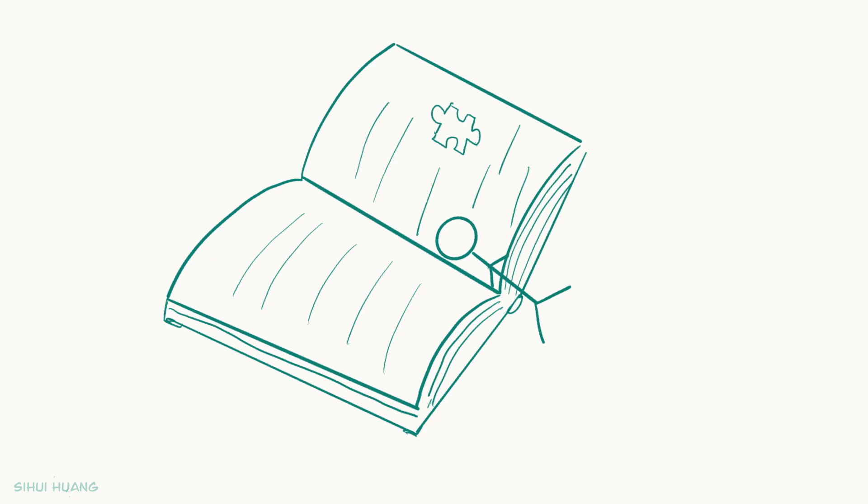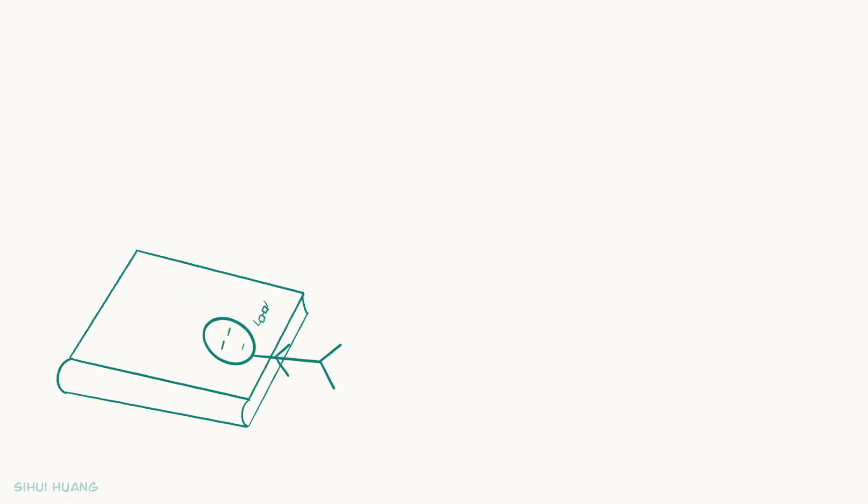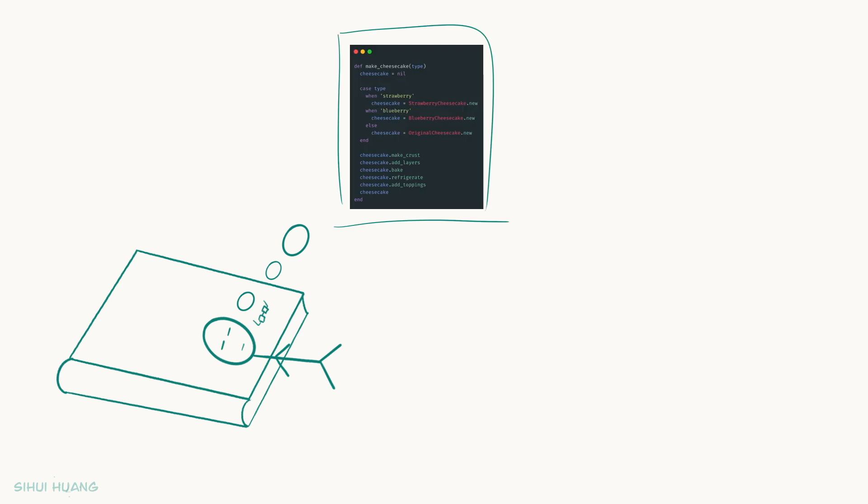As soon as he reaches home, Jeff pulls out the design pattern textbook and starts reading, hoping the book can give him some clues about how to improve his code. He decides to sleep on the book to get more inspiration. In his sleep, he starts to dream about his code.